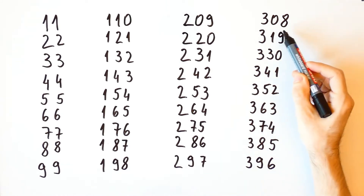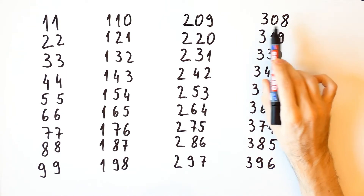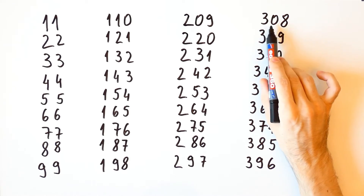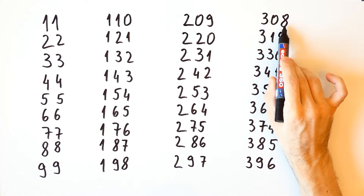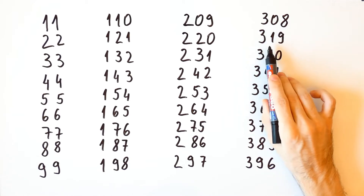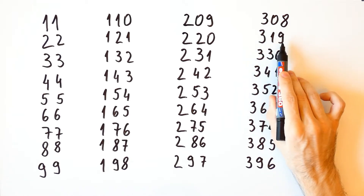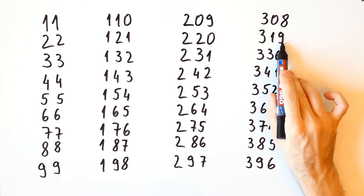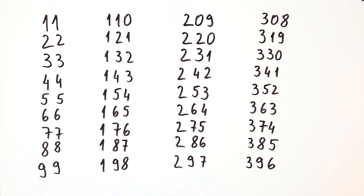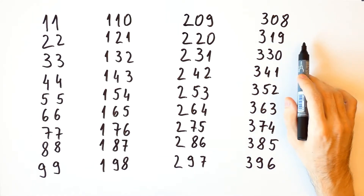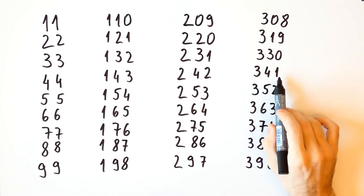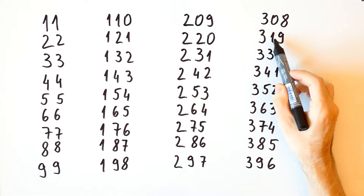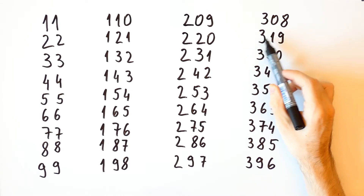In the fourth column we have two such numbers: 308, where the second digit is 0 but 3 plus 8 is equal to 11, and 319, where the second digit is 1 but 3 plus 9 is equal to 12. So for these three-digit numbers, the sum of the first and the third digit is either equal to the second digit, or is equal to the second digit plus 11.